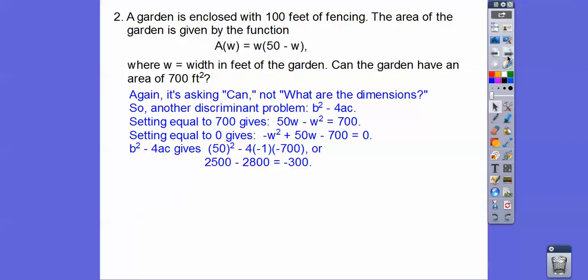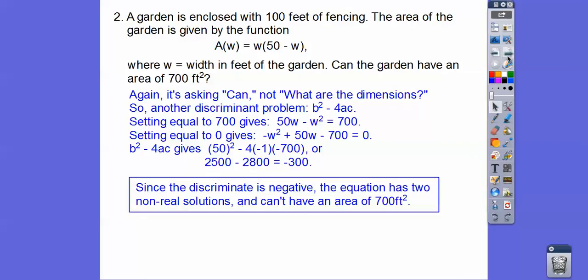So the discriminant is negative. That tells us that the equation has two non-real solutions and can't ever have an area of 700 square feet. So this was in here to trick you. You didn't need that 100 feet of fencing right there.